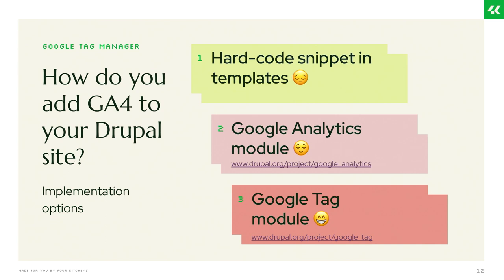So how do you actually add Analytics to your Drupal site? There are a few ways. You can embed the snippet Google gives you in the head of every page, but I generally stay away from that because it's not very flexible — it's just in the code, you can forget it's there, and I've inherited sites with multiple implementations of this because different teams just kept adding it and it gets messy. So I prefer to use a module.